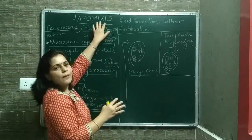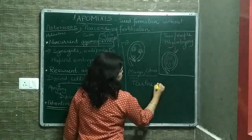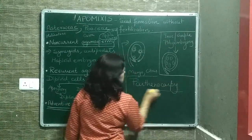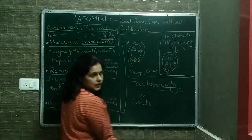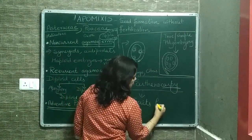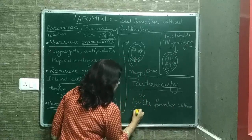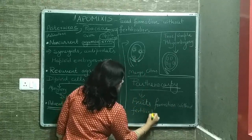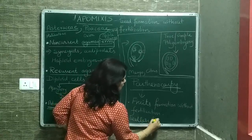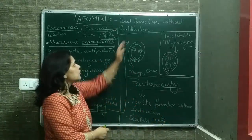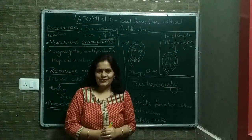You should also know how apomixis is different from parthenocarpy. Parthenocarpy also does not involve fertilization, but here what is being formed is fruits — fruit formation without fertilization — and the fruits formed are seedless fruits. Whereas apomixis is seed formation without fertilization. Thanks for watching. Do subscribe and share the video.